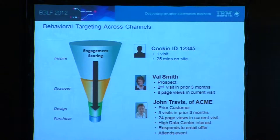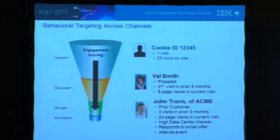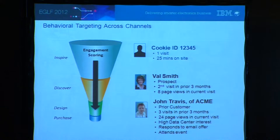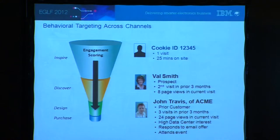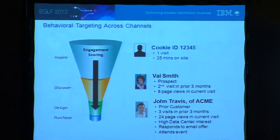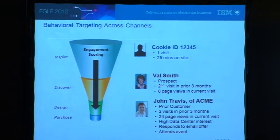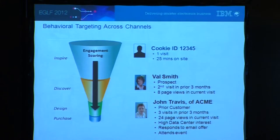Here's an example: we have cookie IDs — anonymous visitors who come and do one visit. They want to capture that information. But then there's Val, who as a prospect has been to the website twice in the last three months, with eight page views on a current visit — we know something about her. Then we look at John, a prior customer: three visits in the prior three months, 24 page views, high interest in data centers, responds to emails, and participates in events. So we need to figure out how do we help Cisco progress anonymous cookie visitors through this process so they become a John.